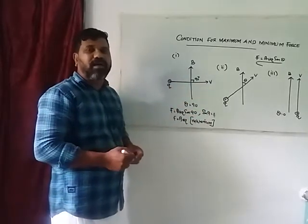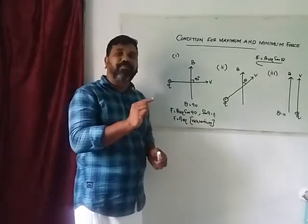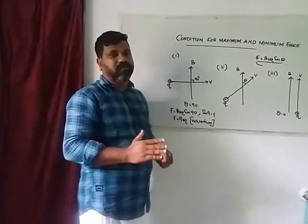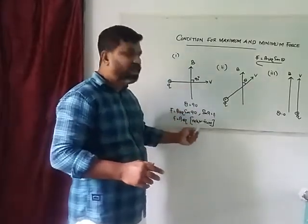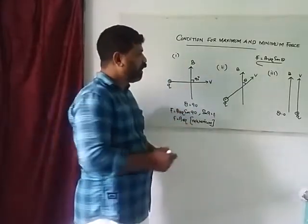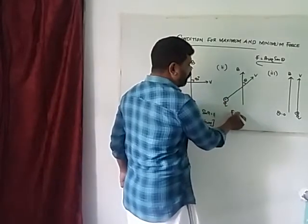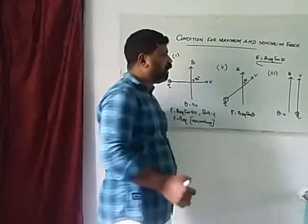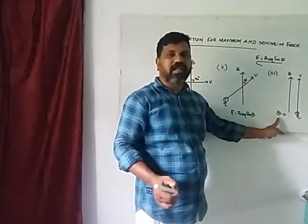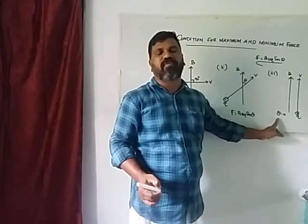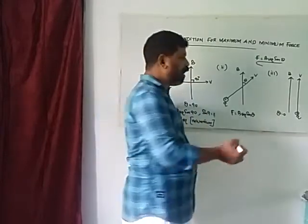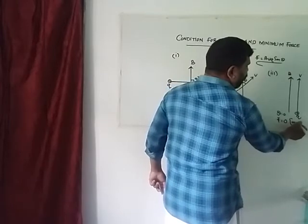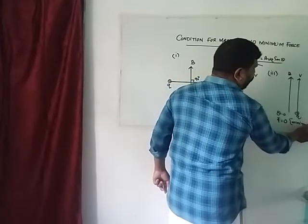The force will be maximum when the velocity vector is perpendicular to the magnetic field — that is, when the charge enters the magnetic field in the perpendicular direction. In the normal case, F is equal to BVQ sin theta. When sin theta equals zero, that is the minimum force.